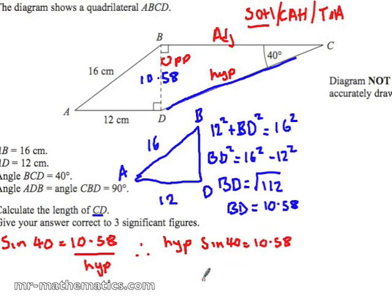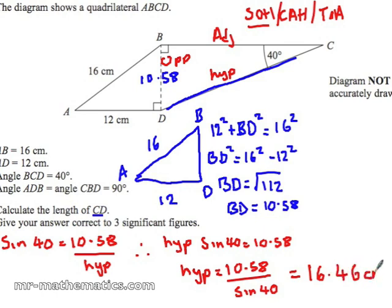Rearranging this to make the hypotenuse the subject, that is equal to 10.58 divided by the sine of 40. So the hypotenuse comes out as 16.46 centimeters.